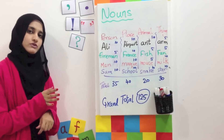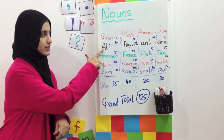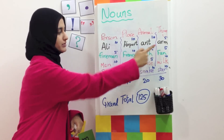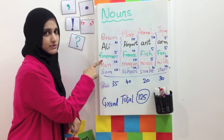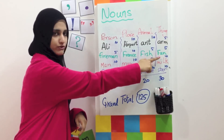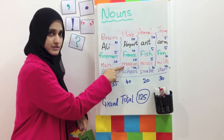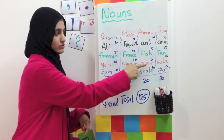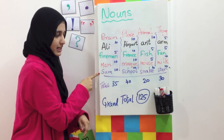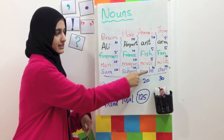Your paper is going to look like this. For example, with A you wrote Ali, Air Force, Ant as the animal, and Arms. With F: Fireman as the person, France as the place, Fish, and Fan. With M: Man, Moth as the place, Mouse, and Mitt as the thing. With S: Sam as the person, School as the place, and Snake as the animal.